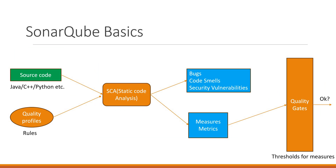SonarQube is used for code quality management. In software projects, developers write code in many languages like Java, C++, Python, and so on. The quality of the code is very important — we should have fewer bugs, the code should be maintainable, there should be fewer security vulnerabilities, developers should follow standard coding guidelines, and there should be less duplication in the code. SonarQube helps developers improve coding standards by following various rules it provides.